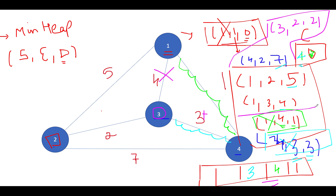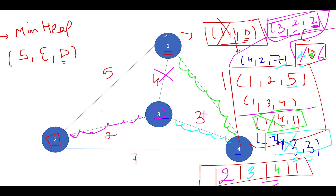We pull out the element with the least distance — which is (3, 2, 2) with distance two. The ending node is two, which is not in the visited set, so we add it. The cost is updated from four to four plus two, which is six. This means we've added the edge between three and two into the minimum spanning tree. All nodes — one, two, three, and four — are now in the visited set, so the traversal is complete and the total cost is six.